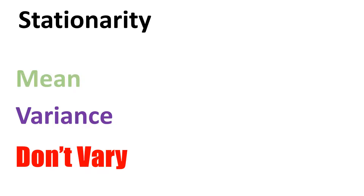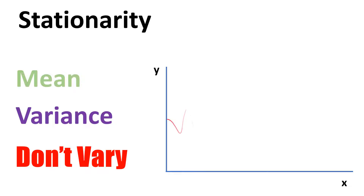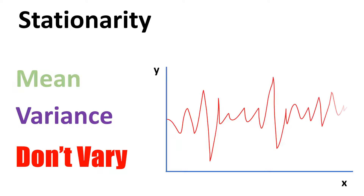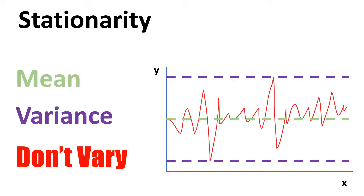Let's say we plot our data on the x and y axes. If we get this kind of hypothetical data, it is stationary. The mean is traveling alongside the x-axis as a straight line, meaning the mean remains constant over time. The x-axis represents time, y represents the dependent variable. The variance is also traveling alongside the mean, so the data is clearly stationary.